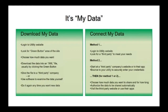Connect My Data works in two ways. You can start on a utility website and choose from a list of third parties that meet your needs — for sizing solar arrays, reducing time-of-use rates, or general efficiency. Alternatively, you can start on a third-party company's website or app, bounce over to the utility's website to enter your credentials, then return to the third party. In either case, you choose how much data to share and for how long, and then benefit from the services that third party provides.